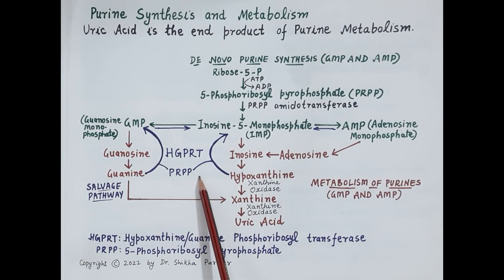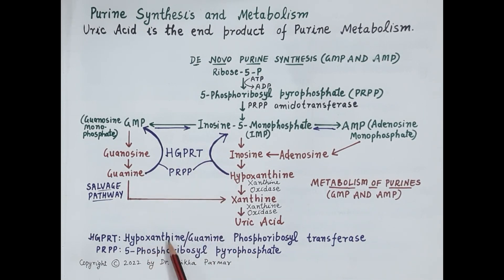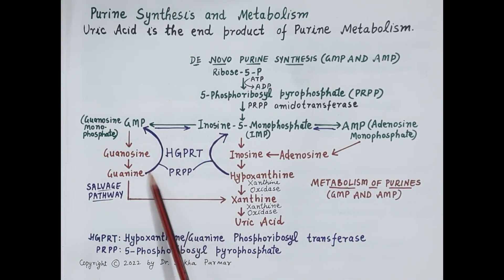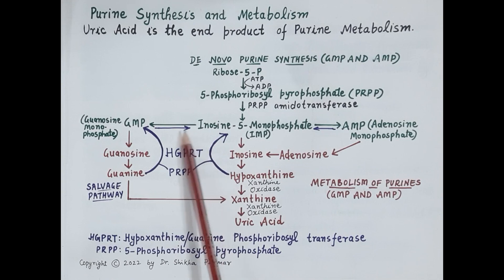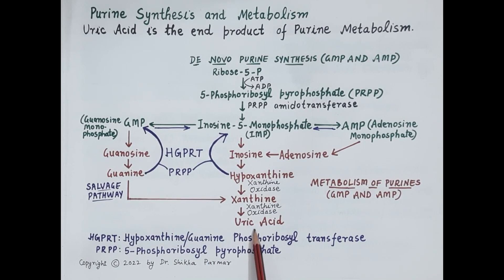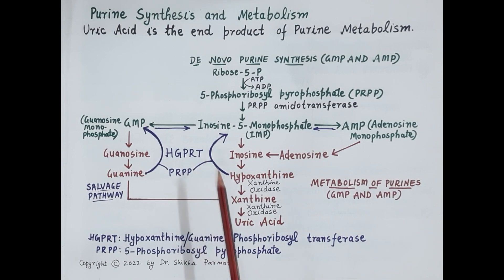It is very important to remember that deficiency of the enzyme HGPRT blocks the salvage pathway. Because of this deficiency, more uric acid is synthesized, which could cause gout. So deficiency of the enzyme HGPRT can cause gout.